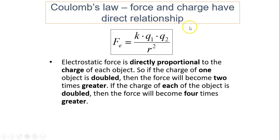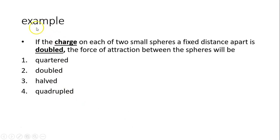In Coulomb's Law, force and charge have a direct relationship — as charge increases, the force increases by the same factor. If the charge on each of two spheres a fixed distance apart is doubled — Q1 is doubled and Q2 is doubled — what happens to the force? The force will quadruple because 2 times 2 is 4.